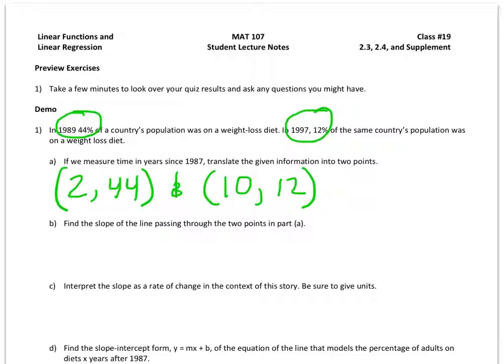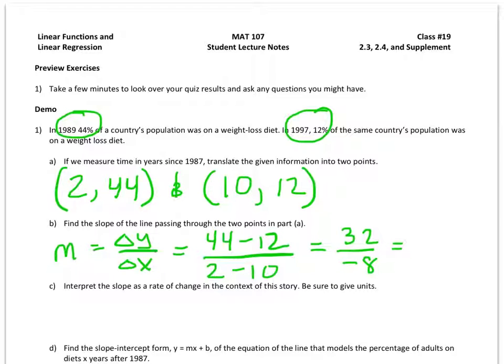Find the slope of the line passing through these two points. So remember, in general, slope is change in y over change in x. So you subtract the y-coordinates, 44 minus 12, over the x-coordinates, 2 minus 10. 44 minus 12 is 32, 2 minus 10 is negative 8. 32 divided by negative 8 is negative 4. And we could always write that as over 1, because that might help us in this interpretation part of the question that comes next.